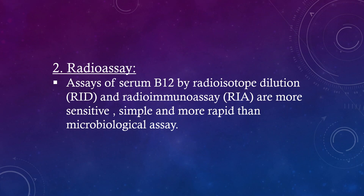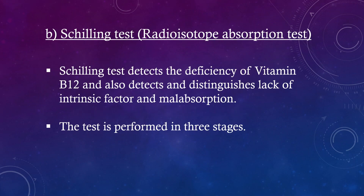Radioassay: Assays of serum vitamin B12 by radioisotope dilution and radioimmunoassay are more sensitive, simple, and rapid than microbiological assay. Schilling test (radioisotope absorption test): The Schilling test detects the deficiency of vitamin B12 and also detects and distinguishes lack of intrinsic factor and malabsorption. The test is performed in three stages.